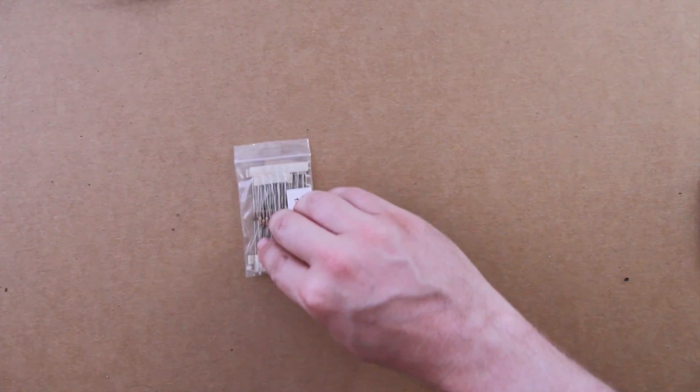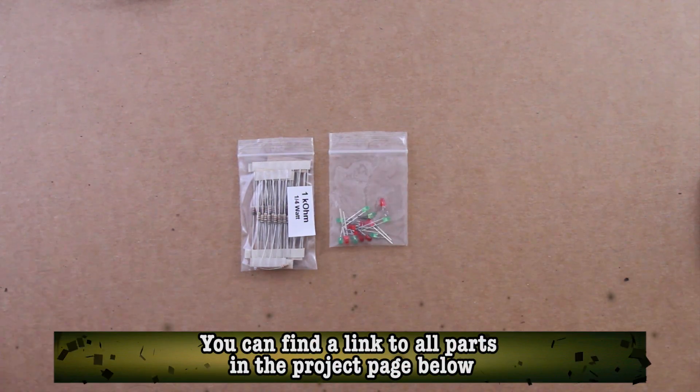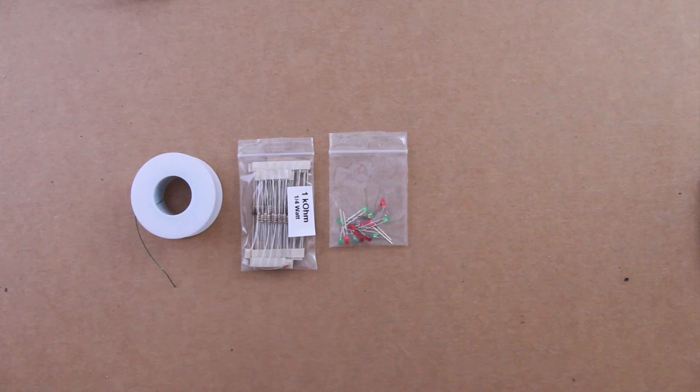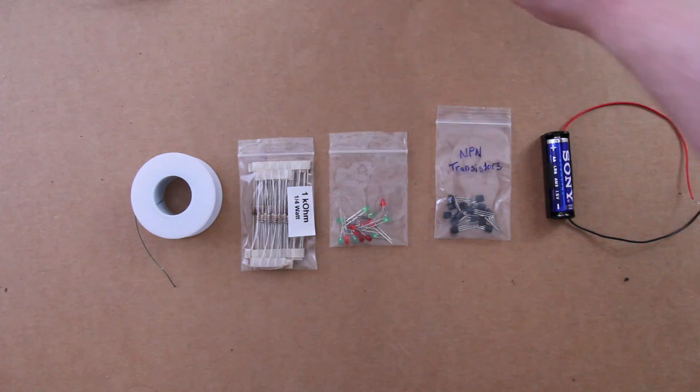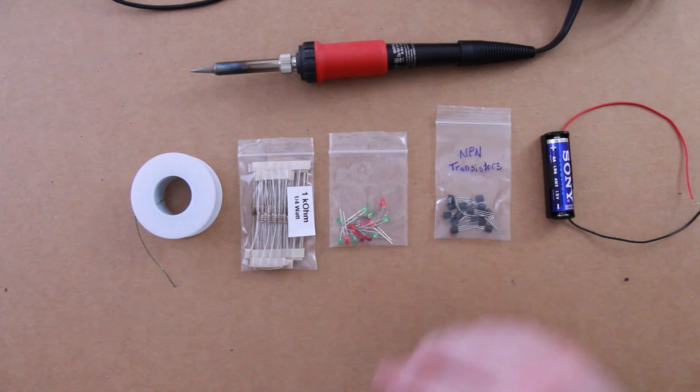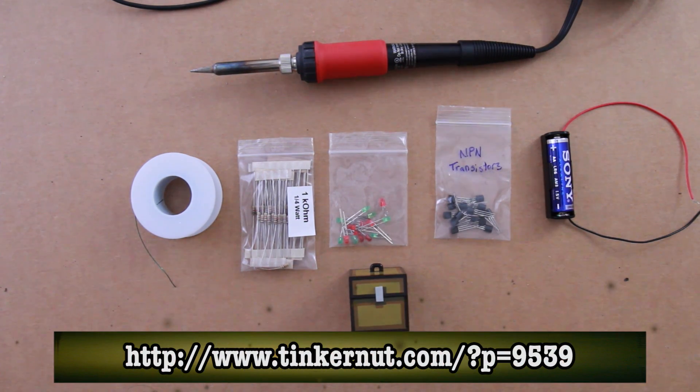Here's what we're going to need for this project: a 1k ohm resistor, a low power LED, a 30 gauge magnetic wire, an MPN transistor, double A battery, soldering equipment, and if you want it to look cool, a small toy lamp. You can find more information on the parts needed at this link.